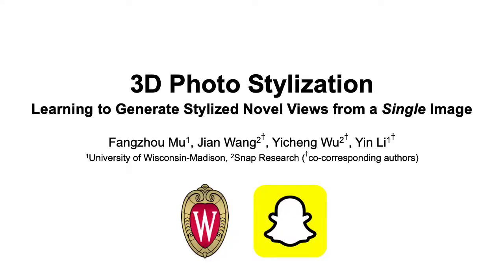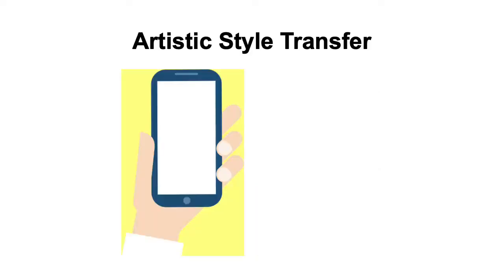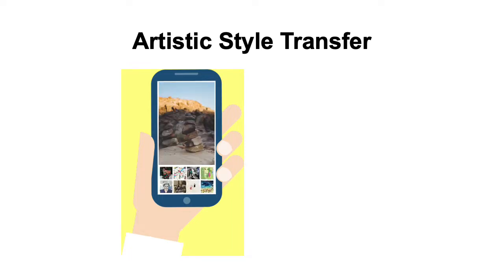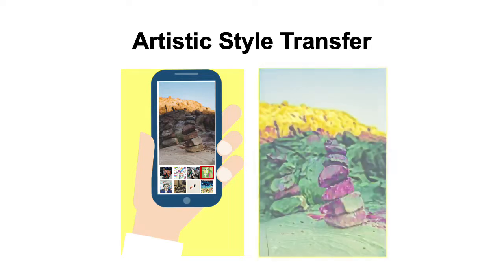We introduce 3D photo stylization, a learning-based method for generating stylized novel views from a single image. Artistic style transfer as a creative image editing tool has been built into many popular photo sharing apps such as Snapchat. It allows the user to paint the content of a photograph in the style of an artistic masterpiece, all within a single click.